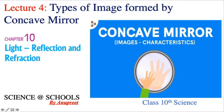Hello dear students, this is lecture 4 of chapter 10 - Light Reflection and Refraction. In previous lectures I discussed reflection of light and image formed by plane mirror. After that, I covered basic constructions of ray formation diagrams. Today I am taking the next topic: types of image formed by a concave mirror.